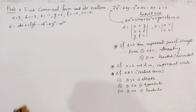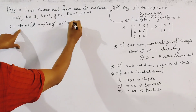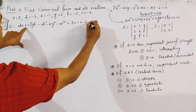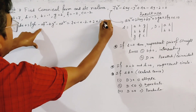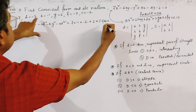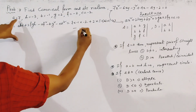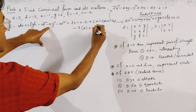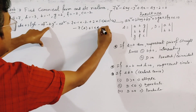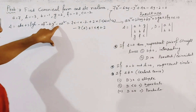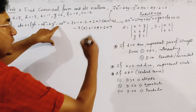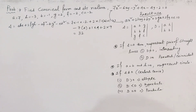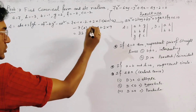Putting in the values: a=7, b=-1, c=-2, f=-2, g=2, h=-3, we compute: 7×(-1)×(-2) + 2×(-2)×(2)×(-3) - 7×(4) - (-1)×(4) - (-2)×(9). Calculating this gives delta = 32, which is not equal to 0.